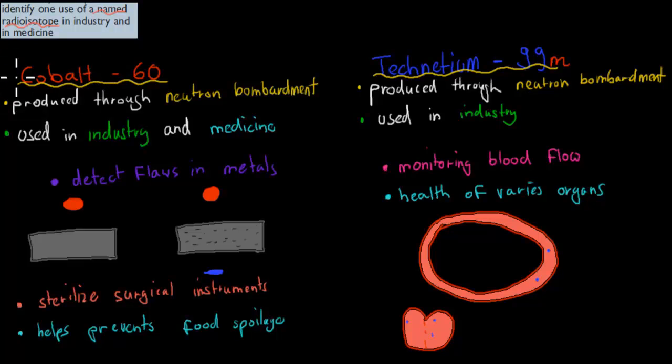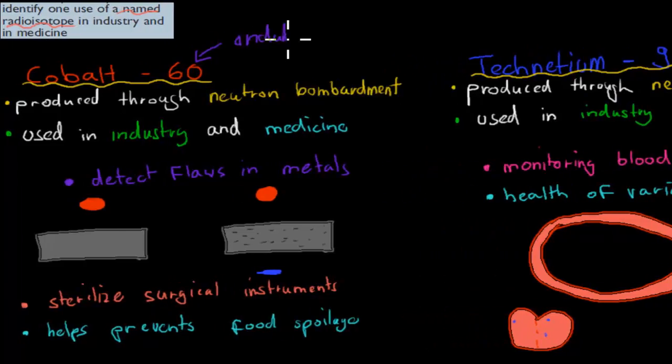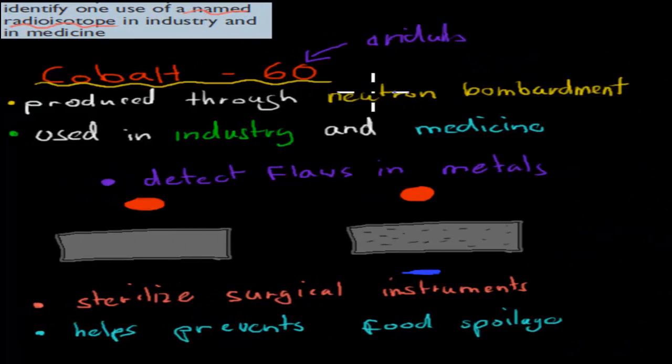So for the industry, I've chosen cobalt-60. That is the industry one. It's produced through neutron bombardment. I'm not going to go over this in much detail. But if you're interested, you can always watch the last video. And that's where we discussed how cobalt-60 was actually produced. But basically you have cobalt-59 and you bombard it with one neutron. It goes from cobalt-59, which is stable, into cobalt-60, which is unstable. And therefore a radioisotope.